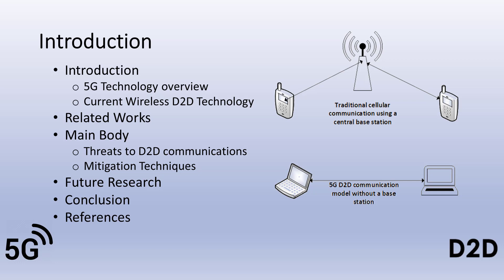This presentation is organized as follows. The introduction continues with an overview of 5G technologies and current wireless D-to-D communication technologies. Related research in the areas of authentication, antenna hardware, and D-to-D communication protocols. The main body covers threats and mitigation techniques, which include the proposed HAFE communication architecture and proposed additional areas of research for the HAFE communication architecture. The presentation conclusion is followed by the references used for the presentation.